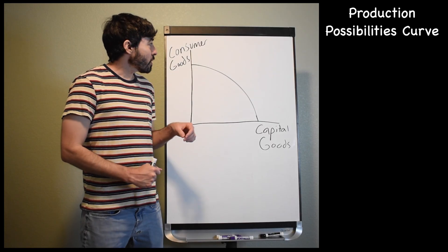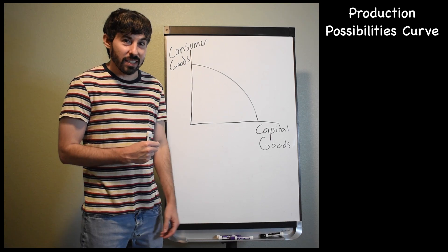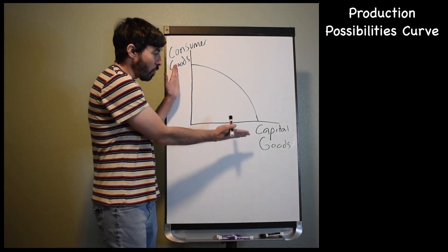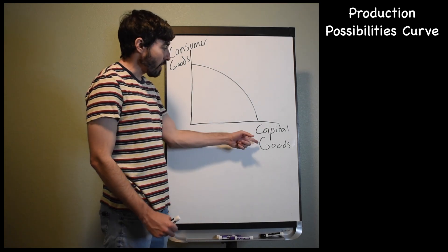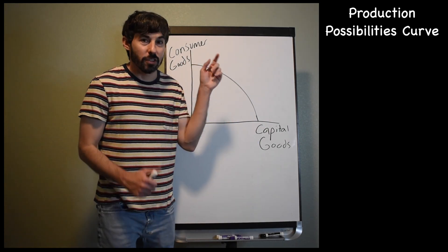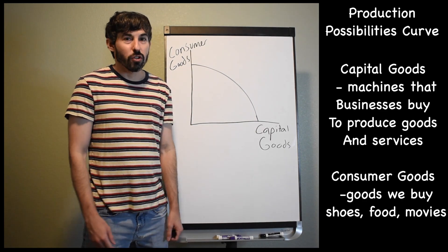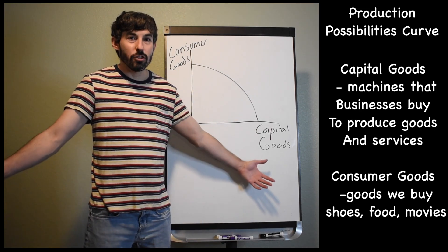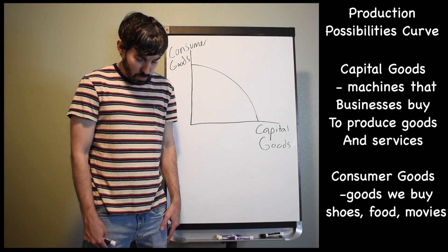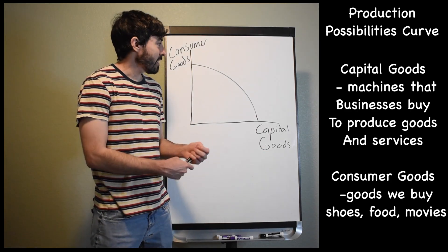Okay, so the production possibility curve is a graph that is showing scarcity and opportunity costs. So we're showing the tradeoff between a country producing two goods, either capital goods or consumer goods. Remember that capital goods are machines and factory equipment that businesses buy in order to produce more goods and services in the future, and consumer goods are things that we buy, things like shoes, clothes, food, candy, chocolate, cookies, coffee, yeah, that stuff.